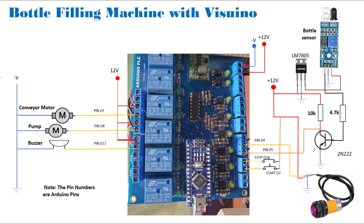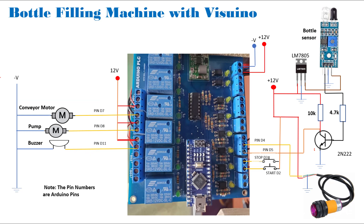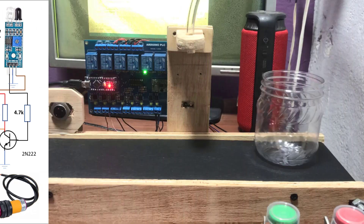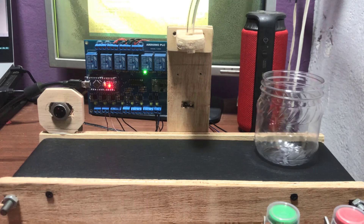This is the circuitry. We have the output devices: the conveyor belt, the pump, and the buzzer. We have the input — that's our start/stop push button, our bottle detection sensor, and the end of conveyor sensor as well. We have the control board which is our Adreno PLC, and then we have the filling tube.